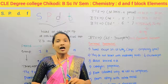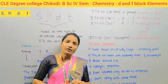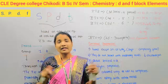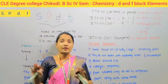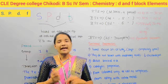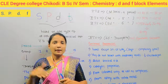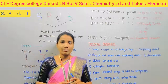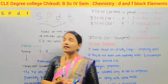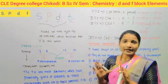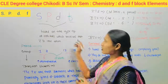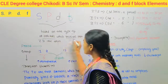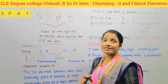According to the electronic configuration of elements, elements have been classified into four different types: S-block elements, P-block elements, D-block elements, and F-block elements. This classification is totally based on the type of atomic orbitals which receives the last electrons in the atom.